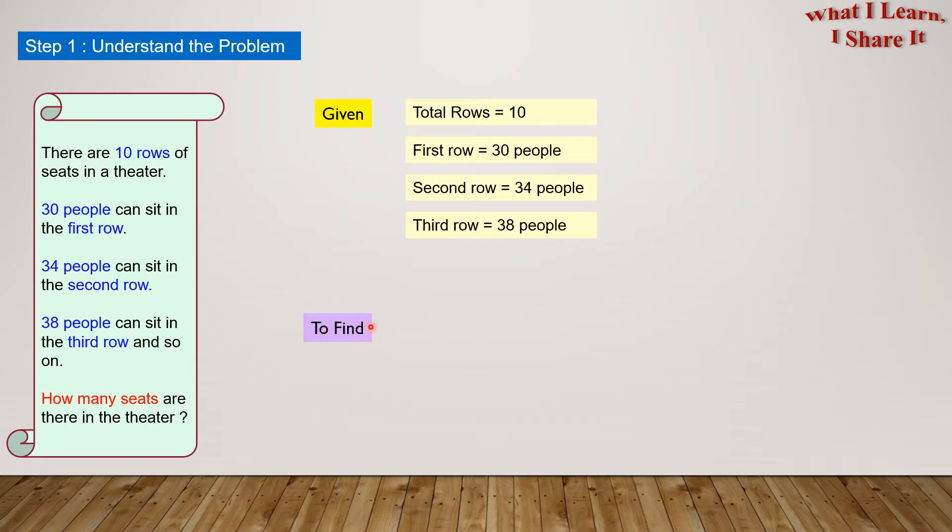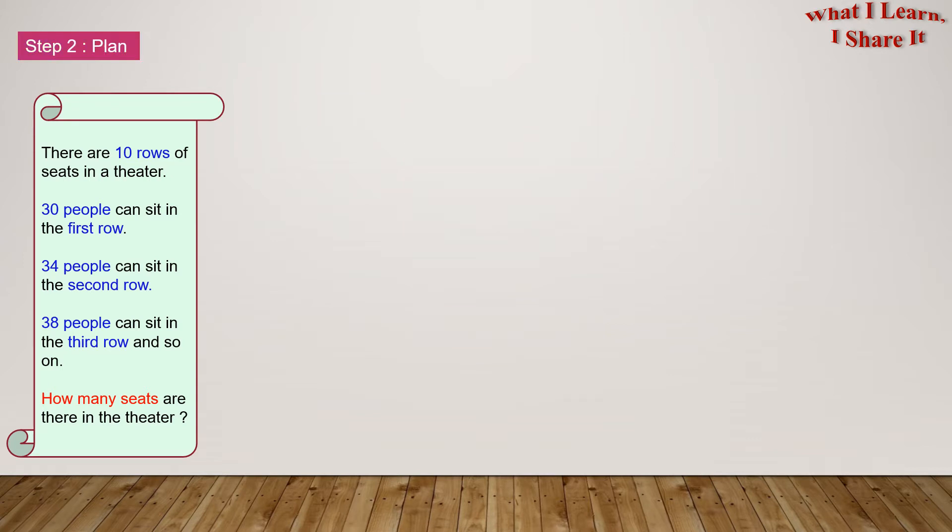What is there to find? We have to find out how many seats there are in the theater. So, in our own words, we can write total number of seats. Step 2, plan.